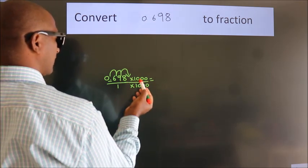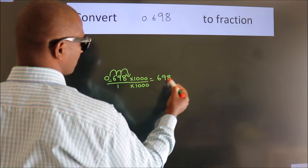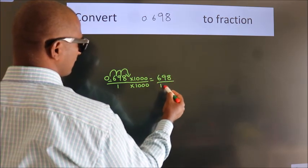0.698 into 1000 equals 698. 1 into 1000 equals 1000.